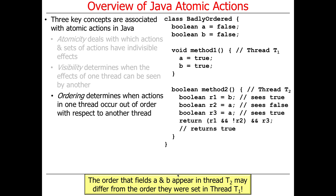The third topic is ordering, which determines when actions in one thread occur out of order with respect to another thread. This class is called BadlyOrdered. We have two Boolean variables A and B, both set to false. Method 1, running in thread T1, sets both to true one after another. Method 2, running in thread T2, has a bunch of Boolean assignments and then a comparison. The answer is again: who knows, because these things are not properly synchronized and therefore not atomic.